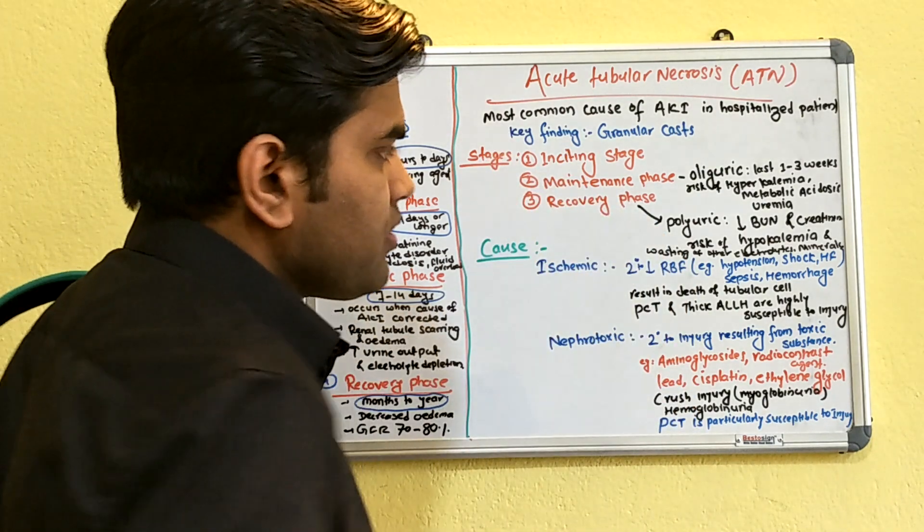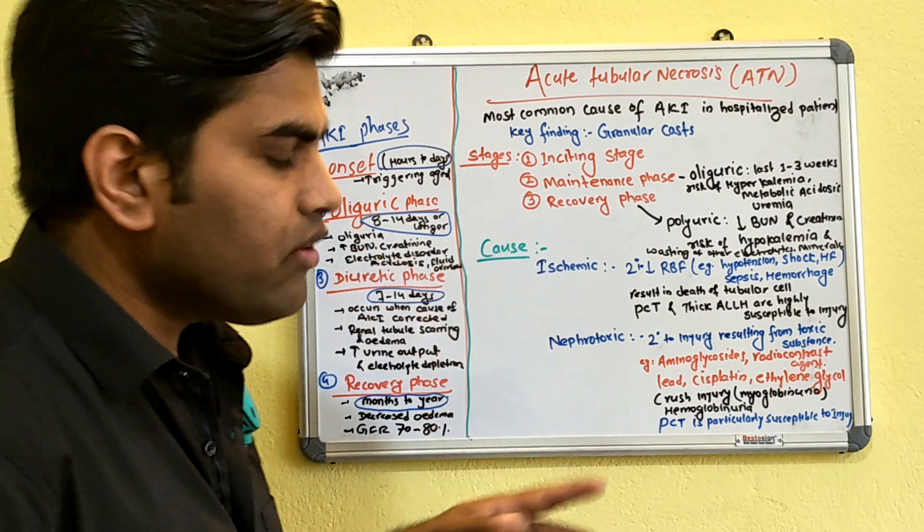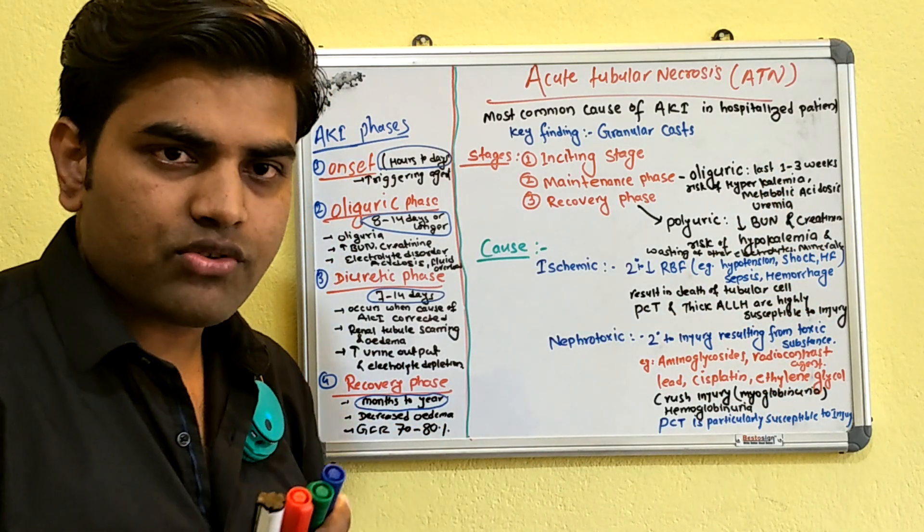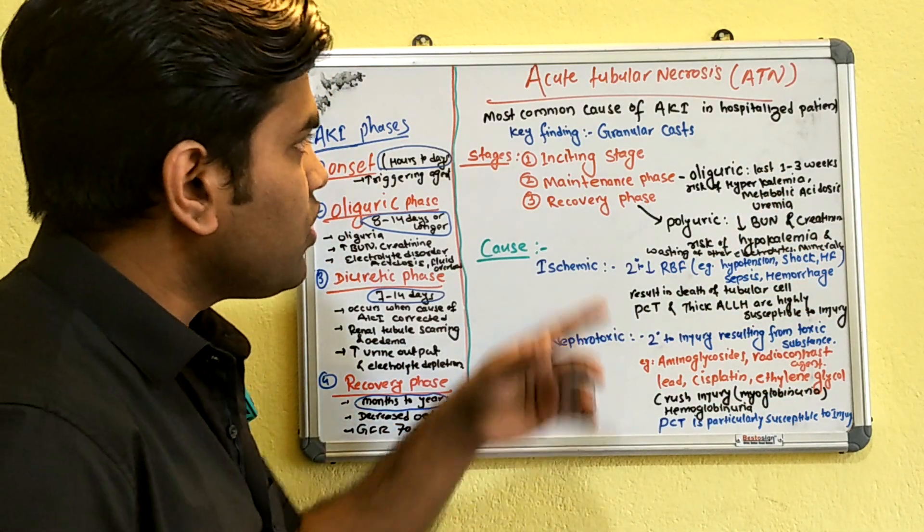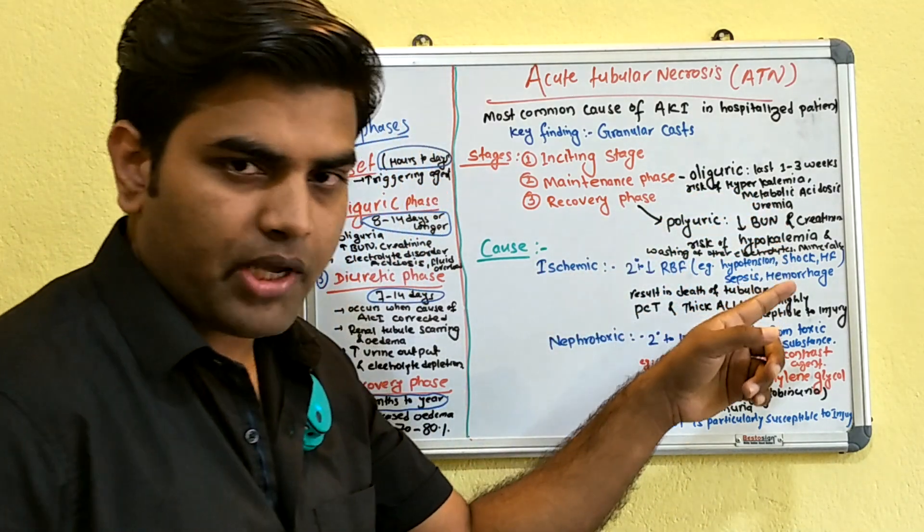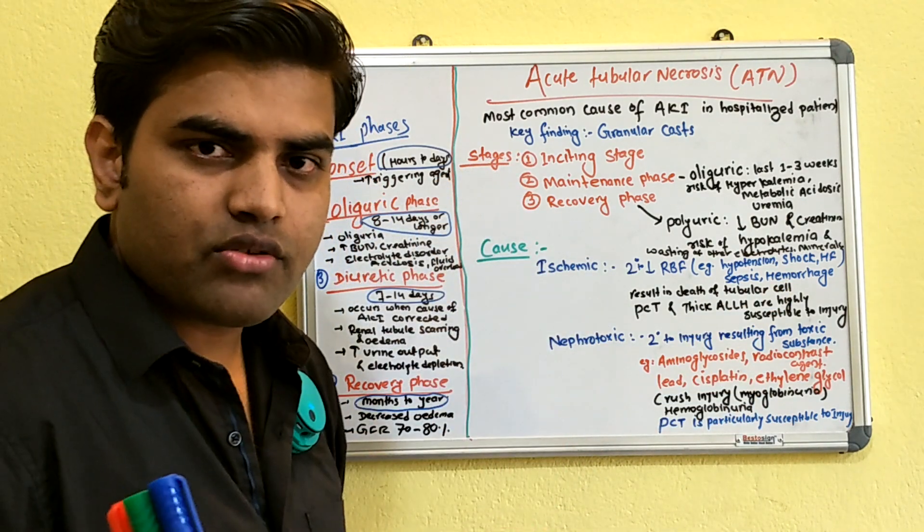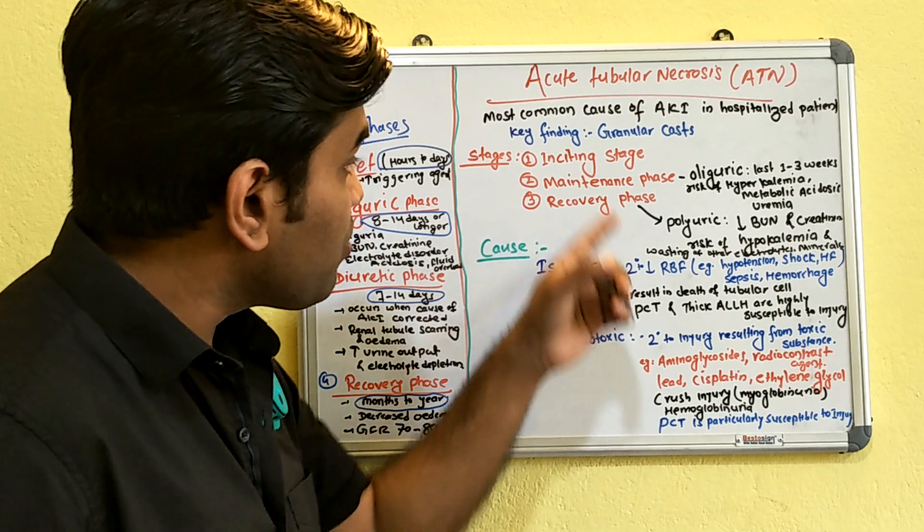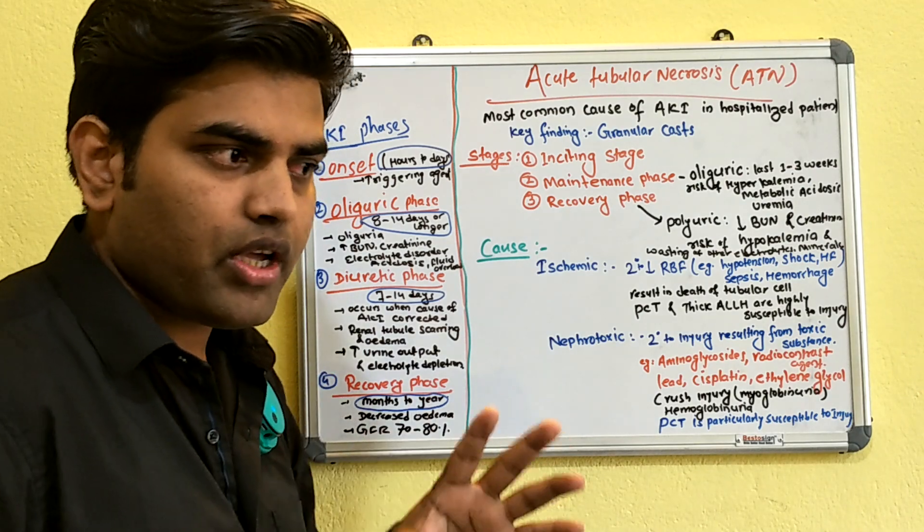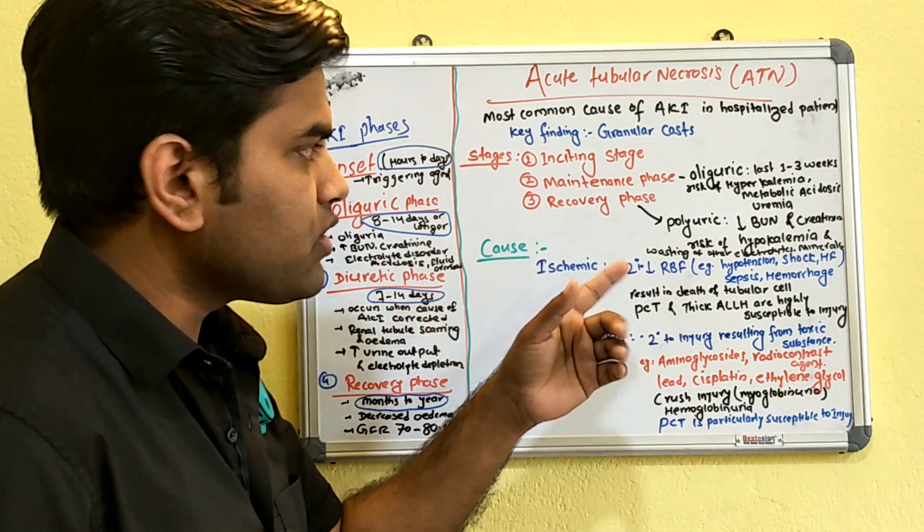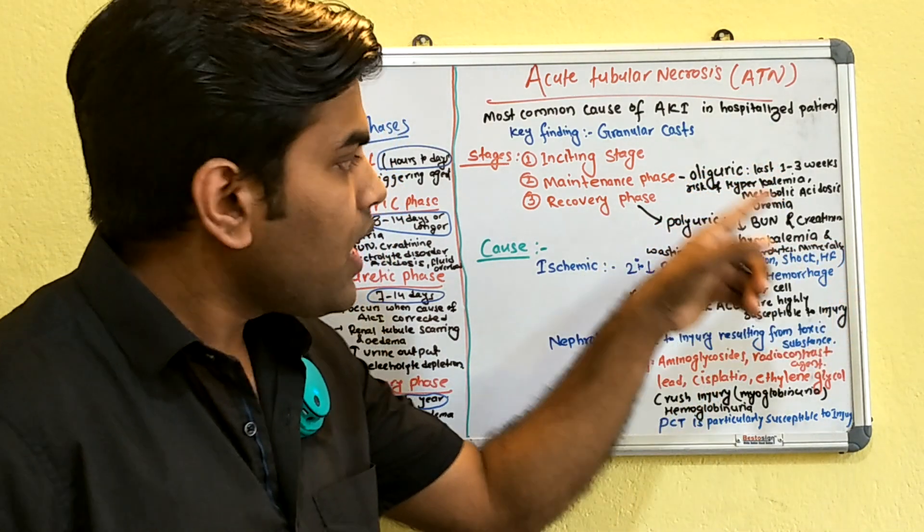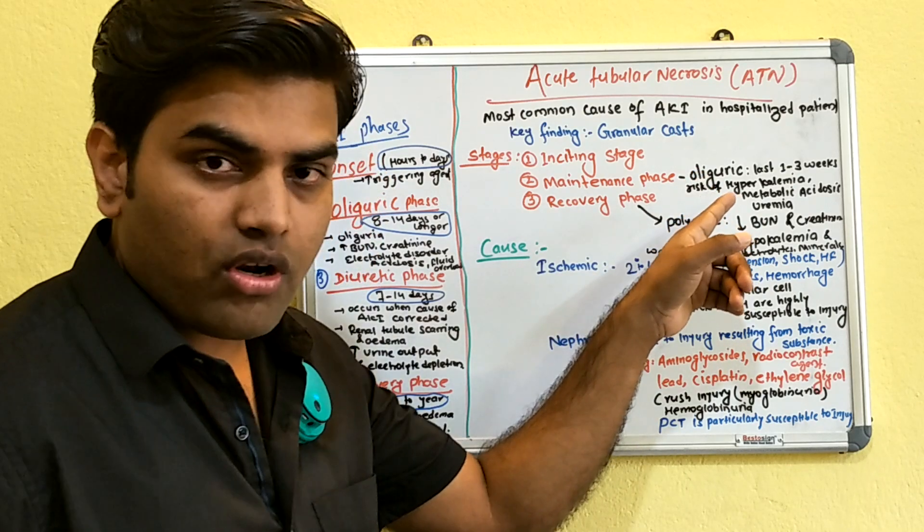Then comes the maintenance phase, which corresponds to the oliguric phase. The oliguric phase lasts from one to three weeks and depends on the severity of the AKI or kidney necrosis. There are risks of hyperkalemia, metabolic acidosis, and uremia. When managing acute tubular necrosis, we want to remove the offending cause during this oliguric phase, which can last one to three weeks or even longer.